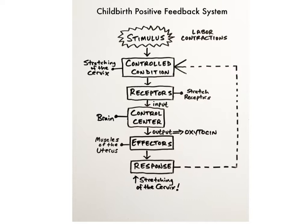Some other examples of positive feedback systems include the blood clotting reactions that stop blood loss, and the inflammation response of the body's immune system.